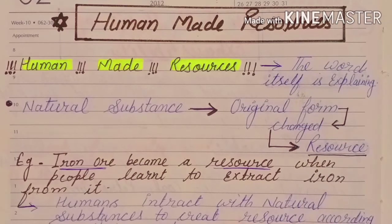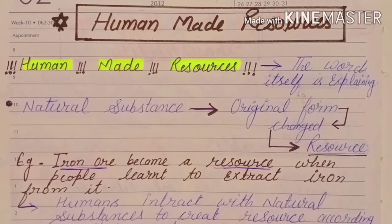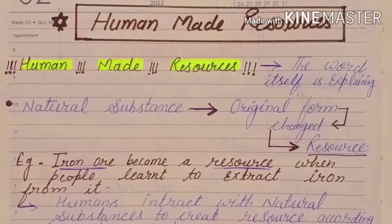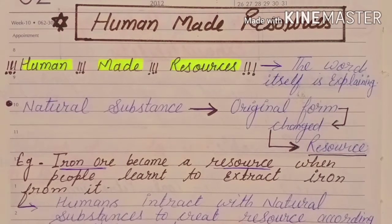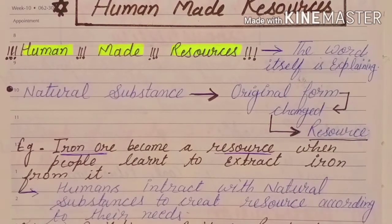Cement, iron rods, and bricks are made from natural substances, but buildings, bridges, and roads are created by humans. Human has used its mind and its own technology to make these things — this is why they are called human-made resources.